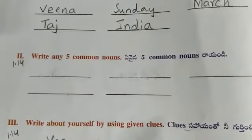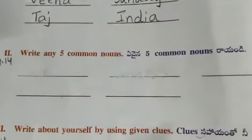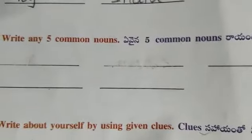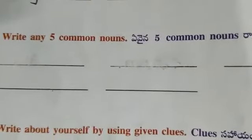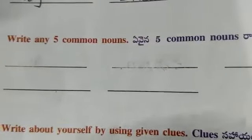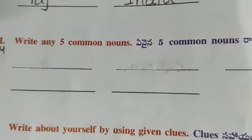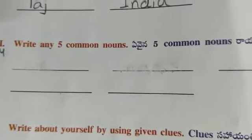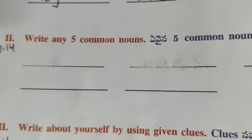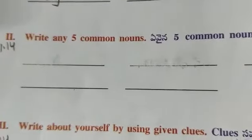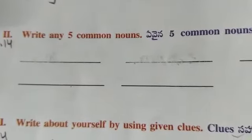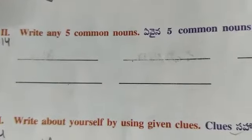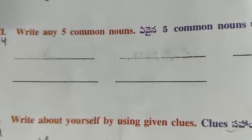Write any five common nouns. A common noun is the generic name for a person, place or thing in a class or group.